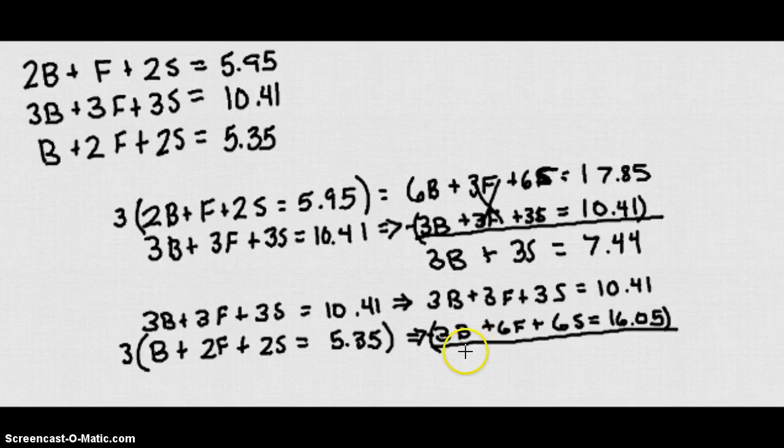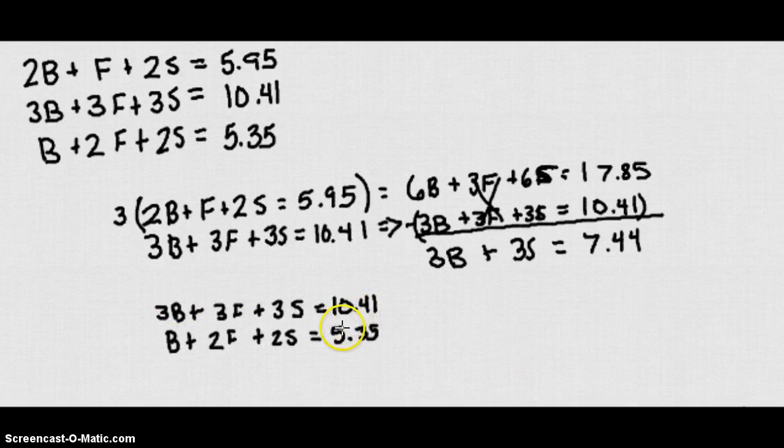So I'm going to go ahead and subtract these to get rid of that B variable. So we have left with negative 3F plus negative 3S is negative 5.64. I apologize for that.